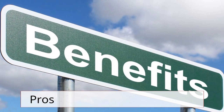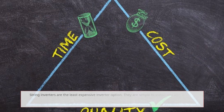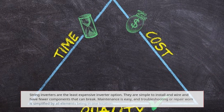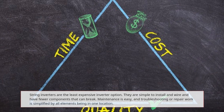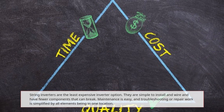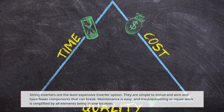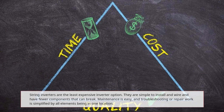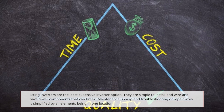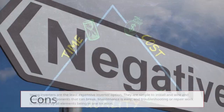Pros: String inverters are the least expensive inverter option. They are simple to install and wire and have fewer components that can break. Maintenance is easy, and troubleshooting or repair work is simplified by all elements being in one location.